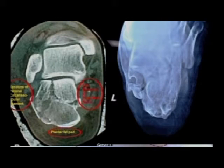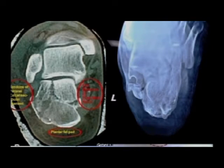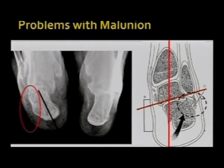This patient with a malunited calcaneus shows what the lateral bulge looks like. On the axial view, there could be pressure from this bump onto the tendon of flexor hallucis longus. There could also be pressure over the tibial nerve, and this lateral blast is going to press over the lateral aspect of the peroneal tendon. This is how a varus malunion would appear.